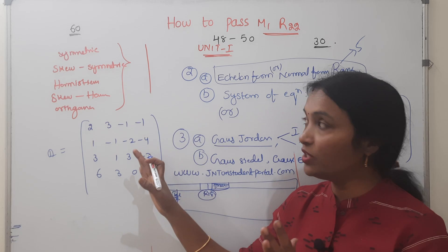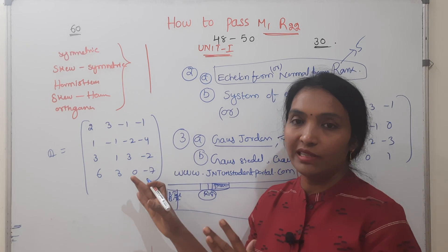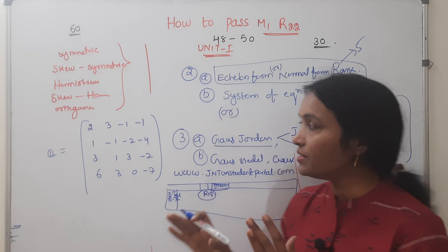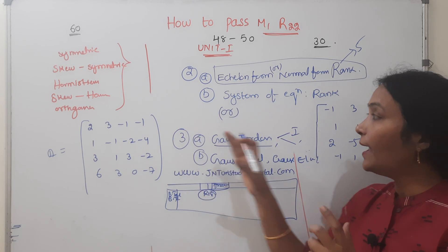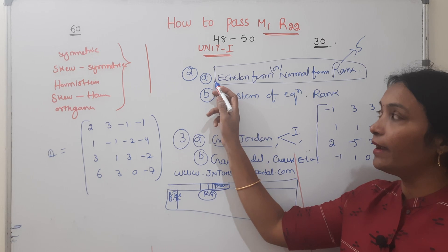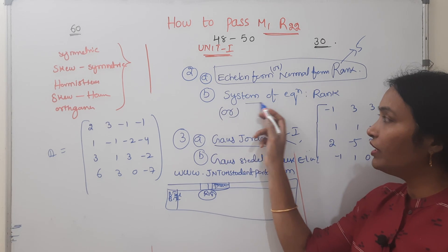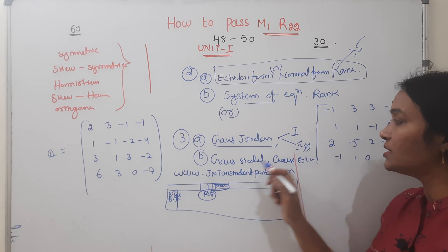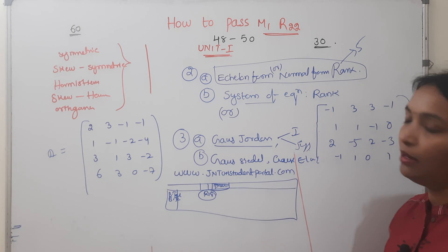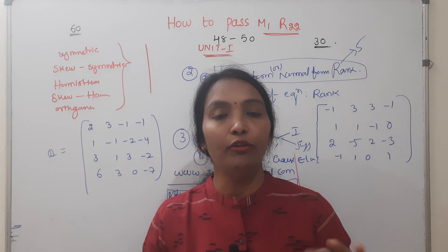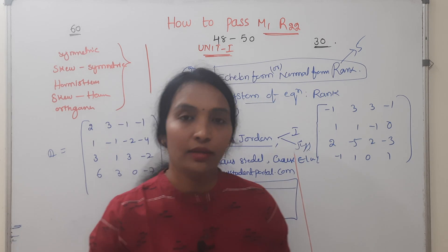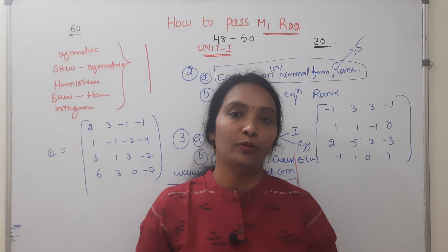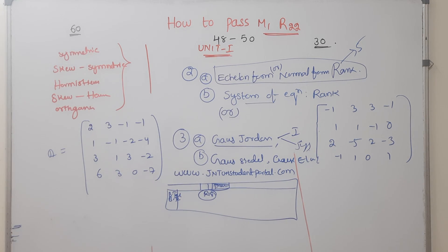To summarize Unit 1: Hermitian, skew-Hermitian, symmetric, skew-symmetric, orthogonal matrix — definitions with properties — compulsory questions. Echelon form and normal form, system of equation solving, Gauss-Jordan method inverse, system of equations, Gauss-Seidel, and Gauss elimination. If you prepare all of this, you can score full marks. Share this video, thanks for watching, see you in the second video.